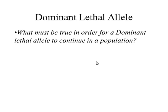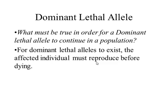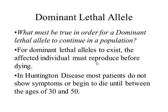Pause until everyone has had a chance to write something down. In order for a dominant lethal allele to exist, the people who actually die from this disease must die after reproductive age. Otherwise, people would die before they had an opportunity to reproduce and pass on that trait. For the example of Huntington's disease, most patients don't show symptoms before they're 30 to 50 years old. In fact, people are often diagnosed with Huntington's disease by the time they're already grandparents.